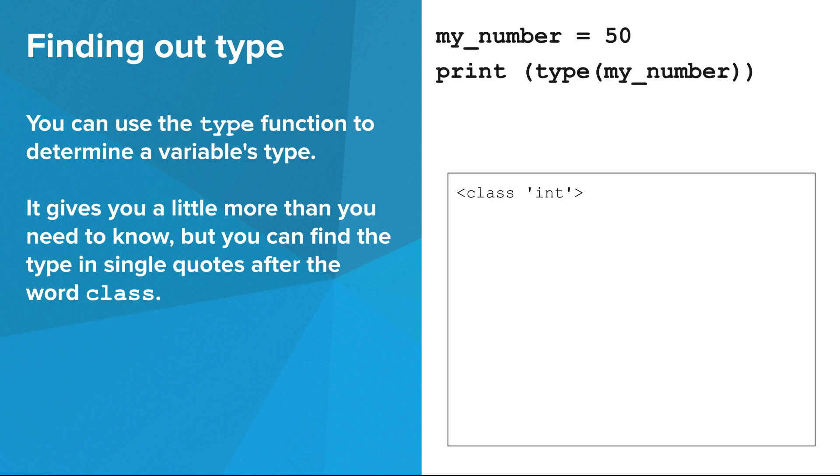Now we can see the type function being used on the variable my number, and sure enough, the type is int. So that's the basics of variables in Python. In future videos, you'll learn how to do more interesting things with a variable than just print its value or its type.